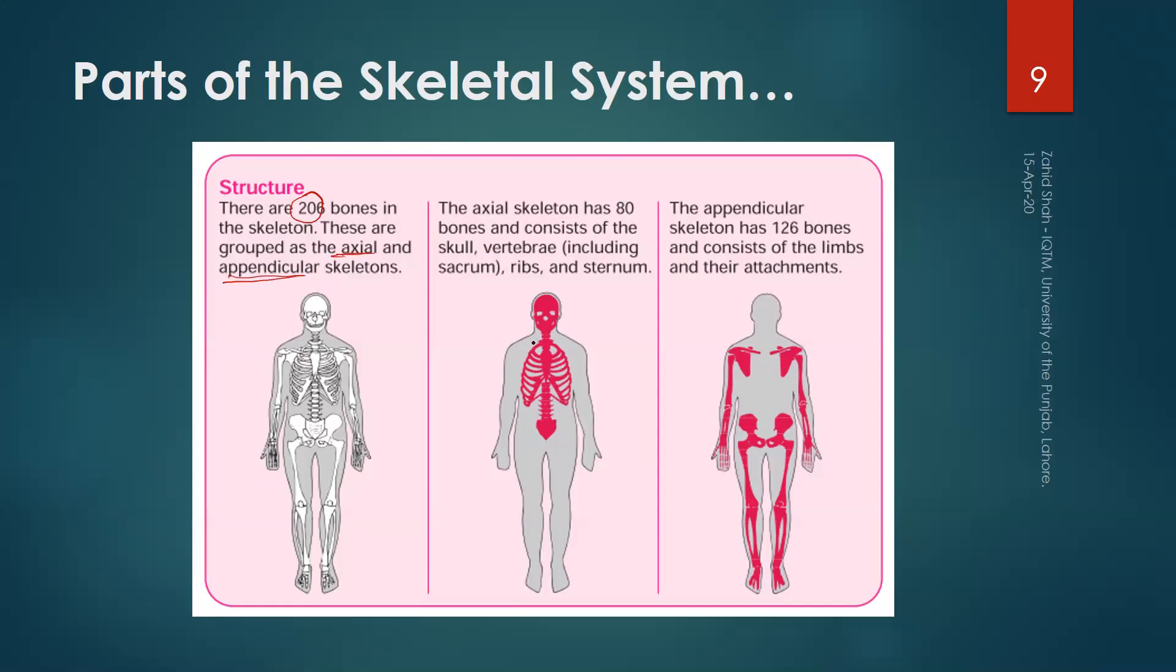The axial skeleton, as shown here, has 80 bones and consists of the skull, the vertebrae—that is your backbone—ribs, and sternum. Sternum is this central chest bone, these are the ribs, and in the center is your backbone.